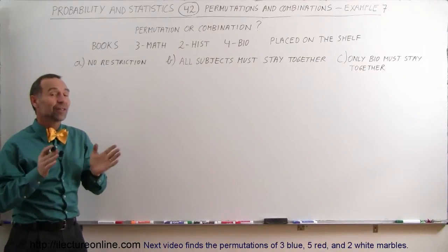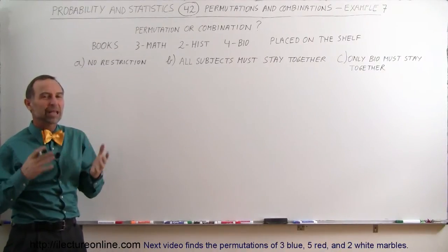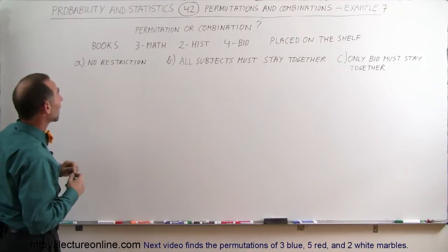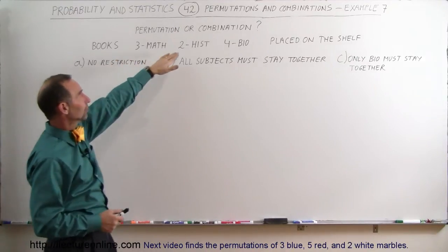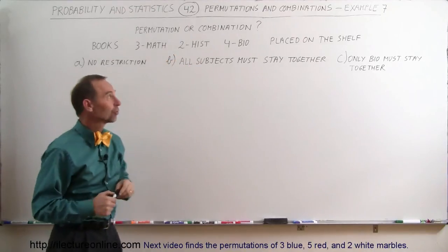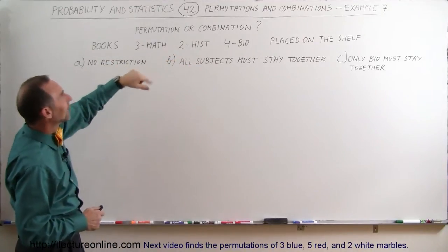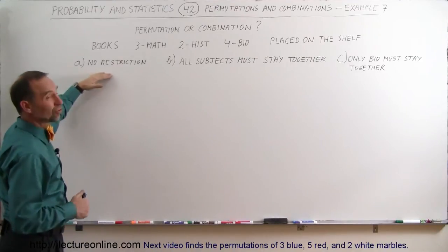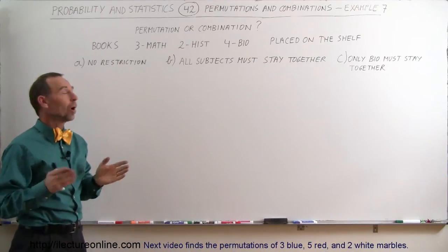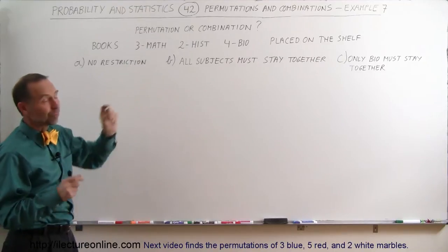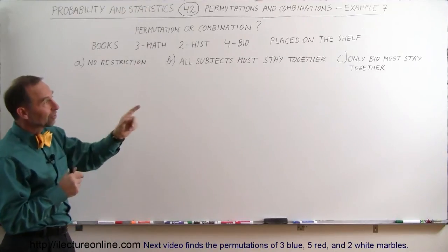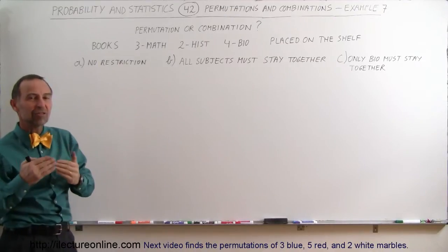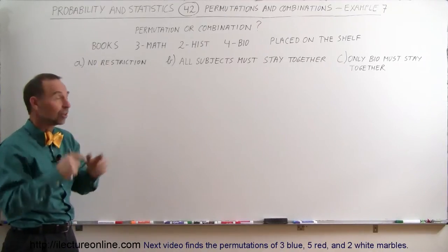Welcome to our lecture online. Here's another example of how to find the permutations of a number of books placed on a shelf. We have three math books, two history books, and four biology books — a total of nine books on the shelf. Part A: no restriction, you can put the books any which way you want. Part B: all subjects must stay together. Part C: only the biology books must stay together. How many different permutations can we have?